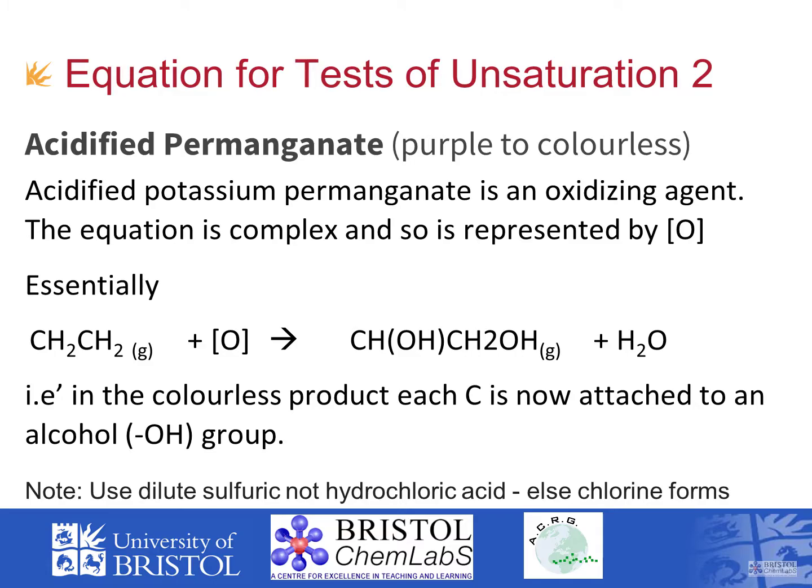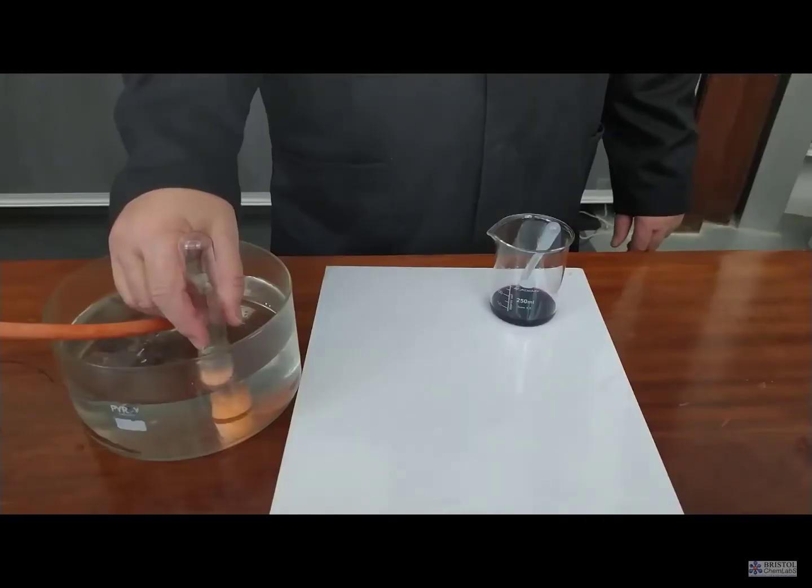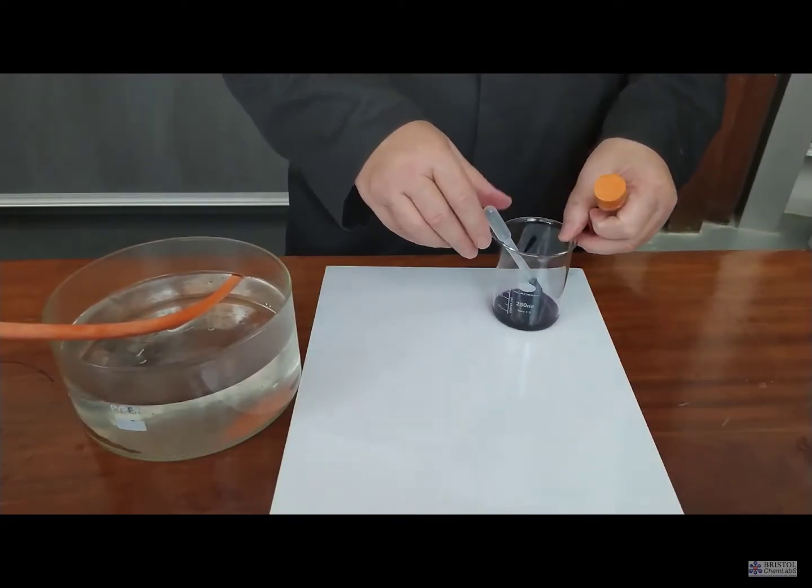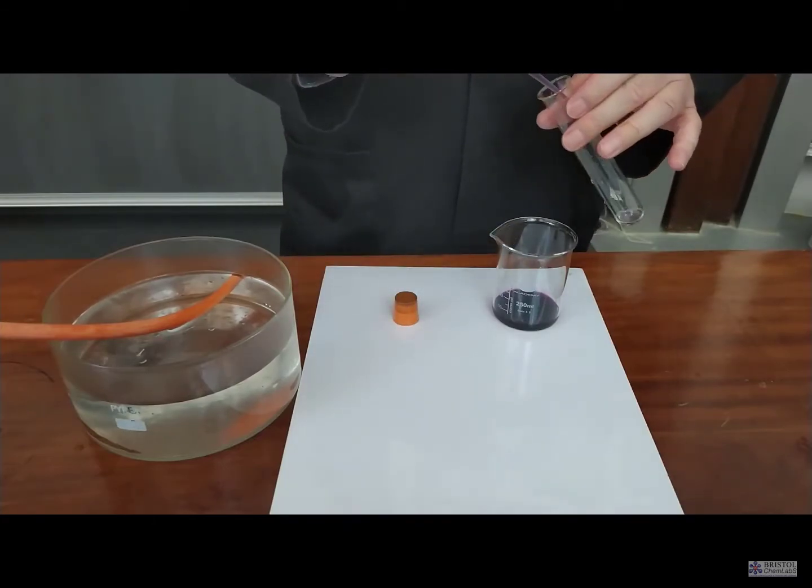With the test for potassium manganate 7, there are a couple of errors that you could do to not show the desired effect. You could make the potassium manganate 7 far too concentrated, and you can use too much. We've done both in this example.